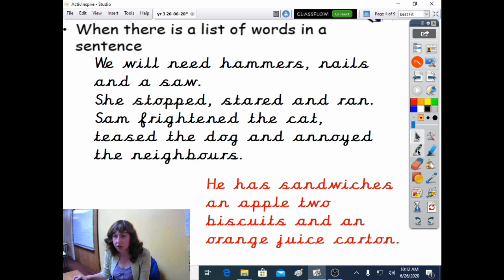Let's see. He has sandwiches. So that's the first item in our list. So we're going to pop a comma. I'm just using the mouse, so it's going to be a little bit wobbly. Now an apple, that's one item. So we're going to pop another comma there.